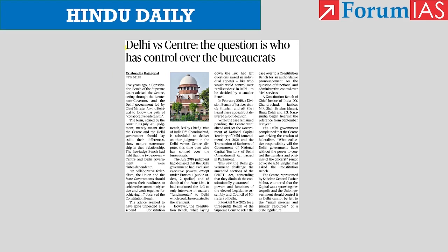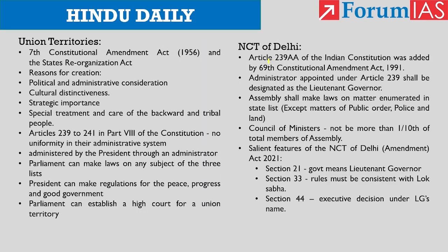First article: Delhi vs. Centre — the question is who has control over the bureaucrats. This news article is regarding the case that is in the Supreme Court between the union government and the union territory of Delhi regarding the control of bureaucracy. The Delhi government took this matter to the Supreme Court to ensure that civil services come under their control. Since this case judgment will be known in a few days, we are waiting for an authoritative pronouncement on the question of functional and administrative control over civil services.